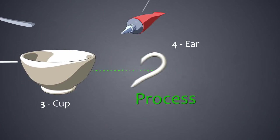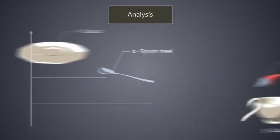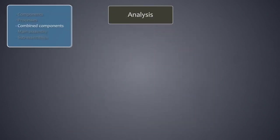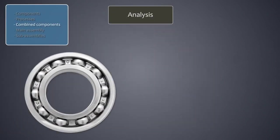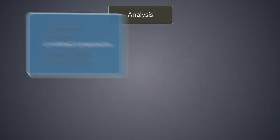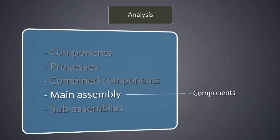Processes are also evaluated using the elimination questions and those that could be eliminated are marked as suspect processes. A combined component consists of several components but is delivered as a combination and cannot be easily dismantled. A ball bearing or photo cell is a combined component. A main assembly is the product for which the assembly diagram is made.